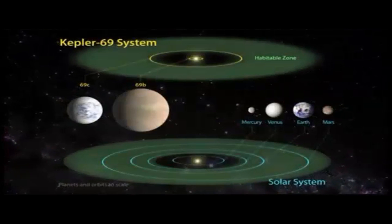The inner planet, Kepler-69b, is 2.2 times the size of Earth and orbits every 13 days. It is much hotter and closer to its star than the planet Mercury is to the Sun.